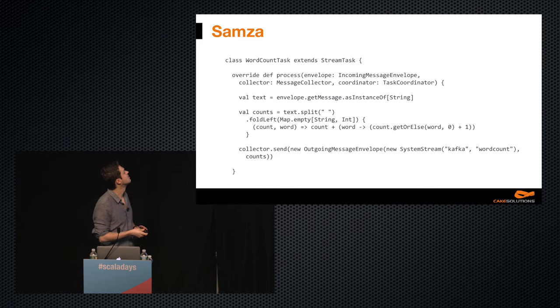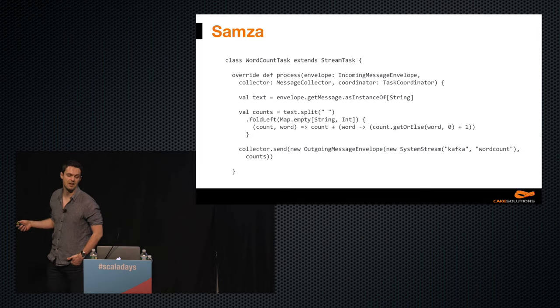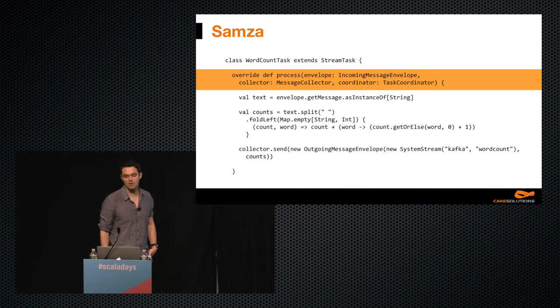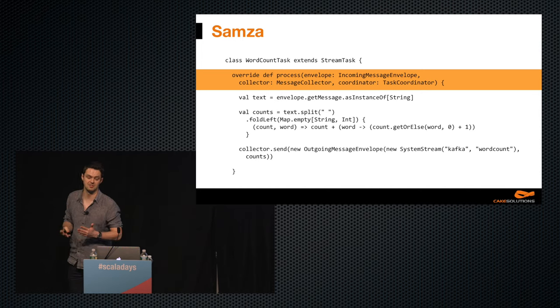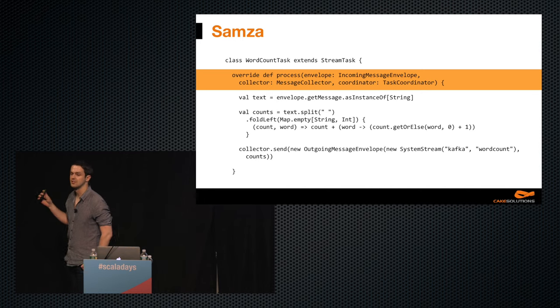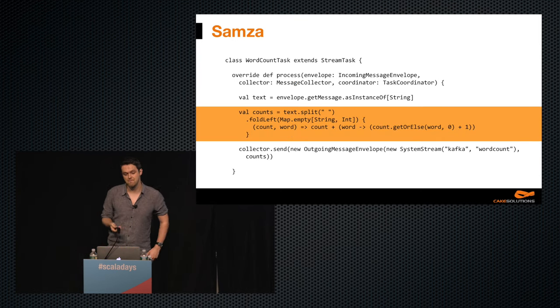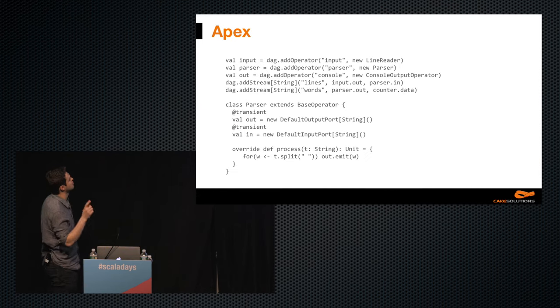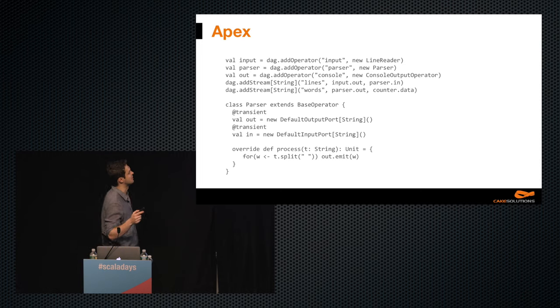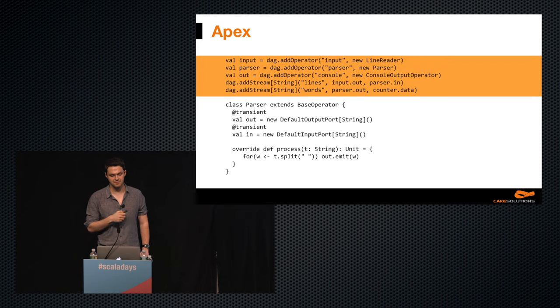Now let's take a look at Apache Samza, another representative of compositional API. The topology is defined in Samza's properties file. The task has defined input and output channels, and communication goes through Kafka topics. In our case, the whole topology is the WordCount task which does all the work. In Samza, components are defined by implementing particular interfaces — in this case, it's a StreamTask — and I've just overridden the process method. The parameters contain all what's needed for connecting with the rest of the system, and the computation itself is just simple Scala. Apache Apex is a classic compositional API. Firstly, we define the job topology, adding components to the DAG and connecting them with streams. Then we define individual components — this one splits incoming strings.